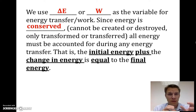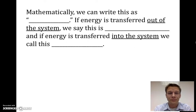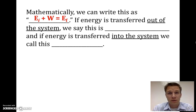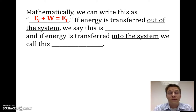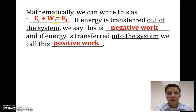What you start with, plus any energy that left or was added to the system, has to equal the final energy of the system. Mathematically: initial energy plus the work done on the system equals the final energy. If energy transferred out, we call this negative work; if energy transferred in, positive work. However, we leave a positive sign in front of W in the equation at all times.